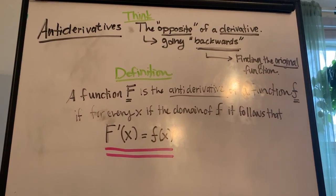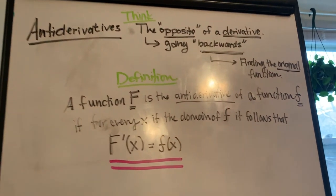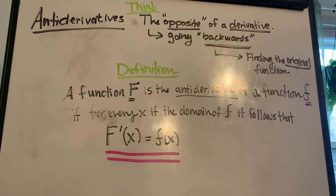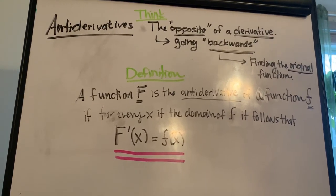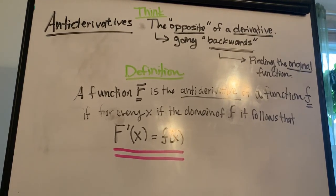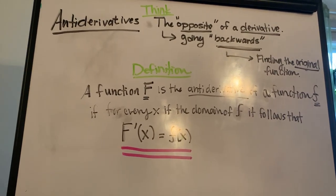So by definition, a function F is an antiderivative of a function f. We like to call this big F and little f. So a function big F is the antiderivative of a function little f.